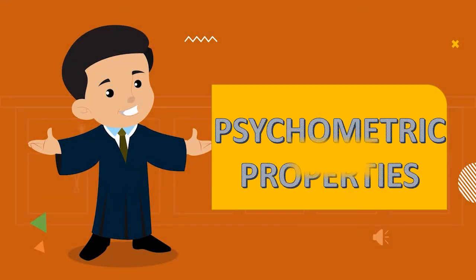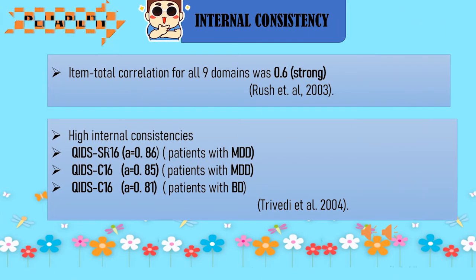Regarding psychometric properties and reliability, the item-total correlation for all nine domains was 0.6, indicating strong internal consistency. High internal consistencies were found for the QIDS self-report 16 at 0.86 and QIDS-C16 at 0.85 among patients with major depressive disorder, and QIDS-C16 at 0.81 among patients with bipolar disorder.